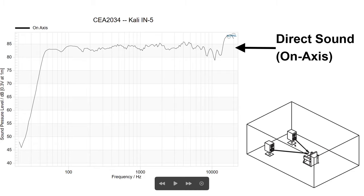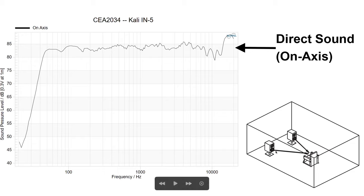I'll show you this graphic from Dr. Toole's book — it illustrates what this line represents. When it says direct sound, the on-axis sound is coming directly from the speaker to the listening position. The sound isn't going anywhere else; it's just coming right to the listener.